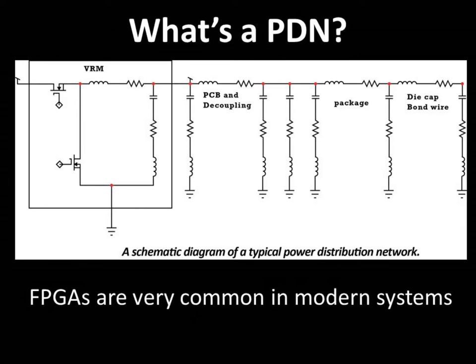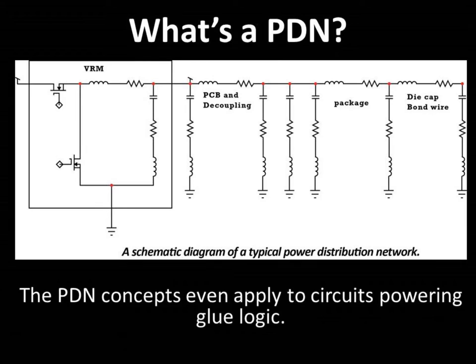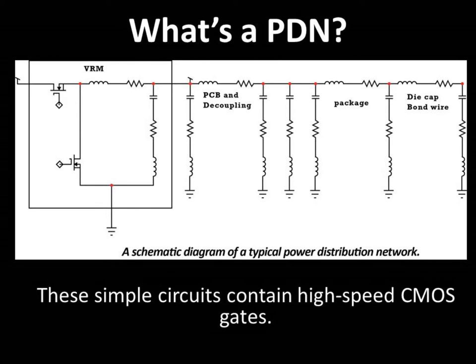The term power distribution network, or PDN, is usually used to describe the circuits that power CPUs and FPGAs. Given the proliferation of FPGAs in modern system designs, this definition alone would warrant that power designers become familiar with PDN concepts. However, PDN concepts apply more broadly to many circuits, not just FPGAs and CPUs. PDNs are present even when powering common glue logic, since even these simple circuits contain high-speed CMOS gates that can wreak havoc in a PDN.